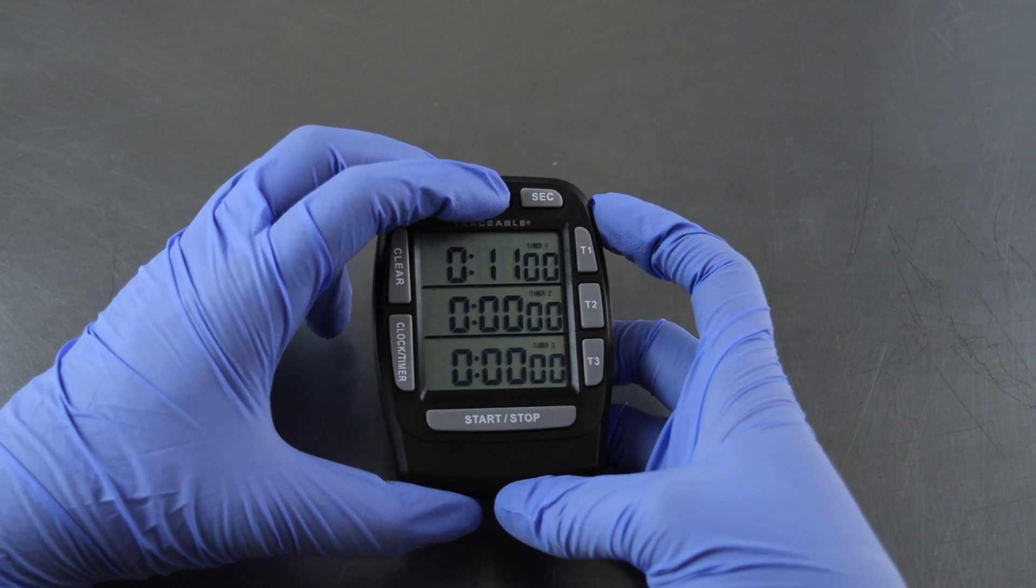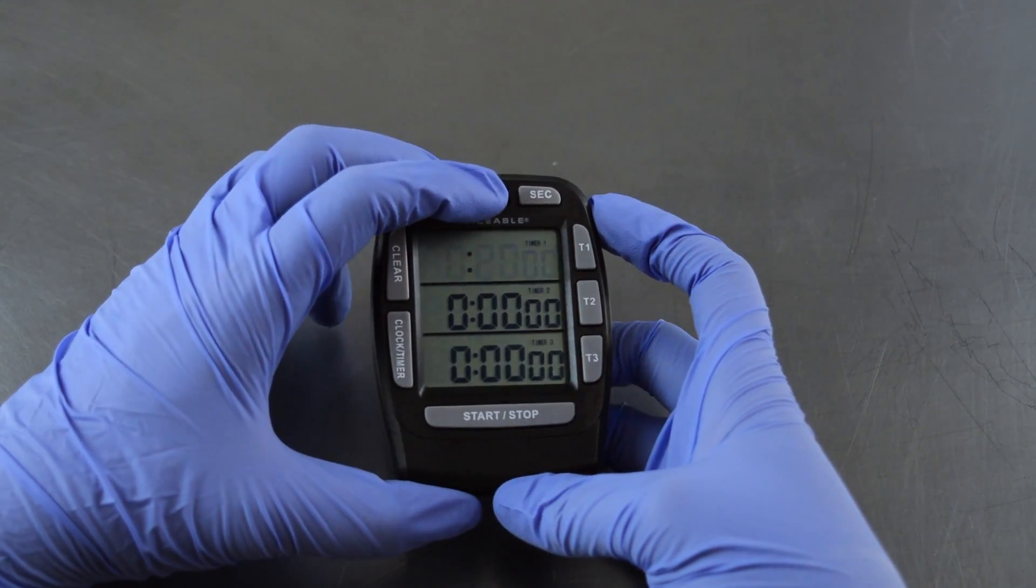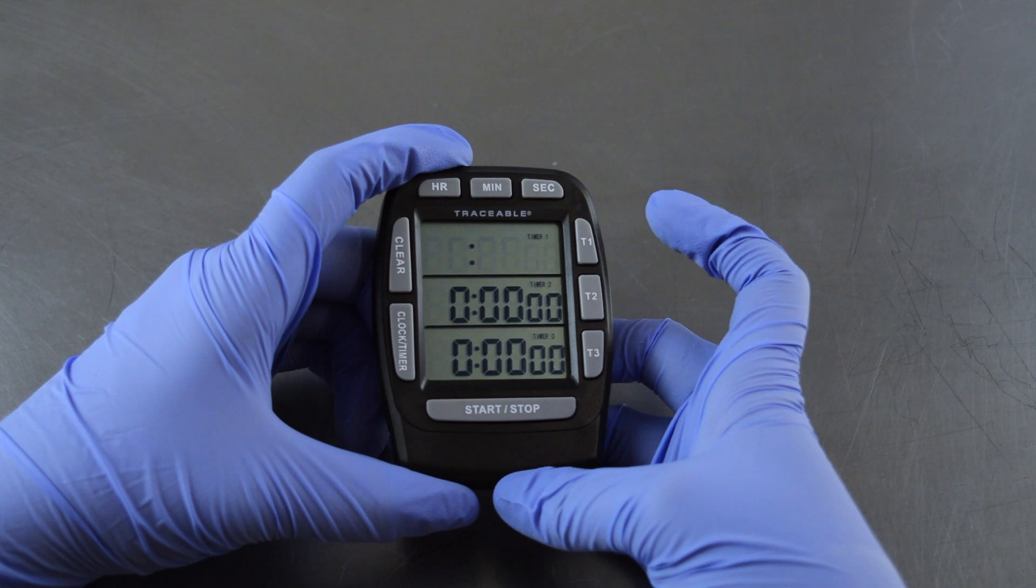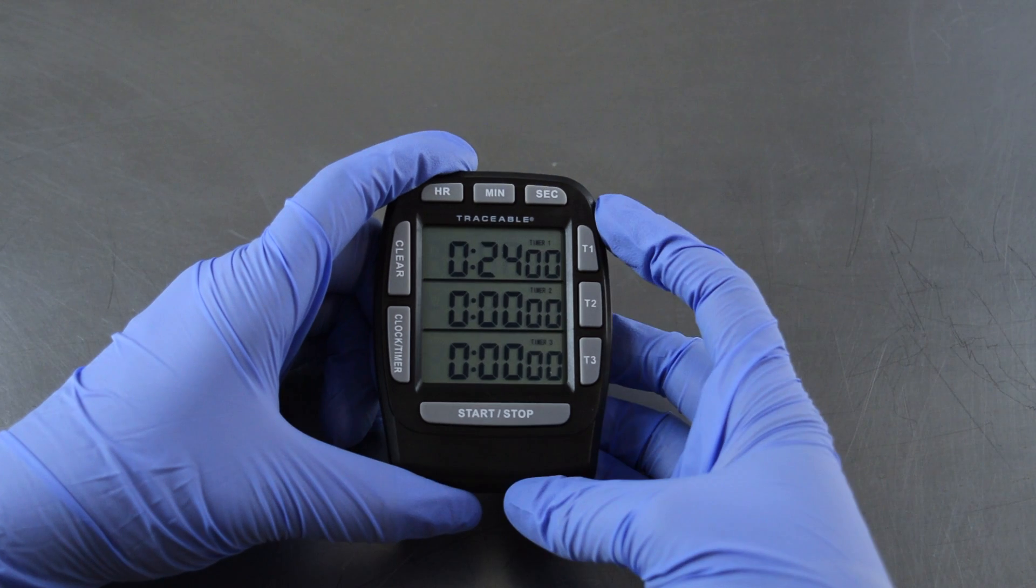Set your timer by pressing the minute button on the top of the timer. Once you see the appropriate time on the screen, press T1 again to lock. The numbers will stop blinking and your timer is set.